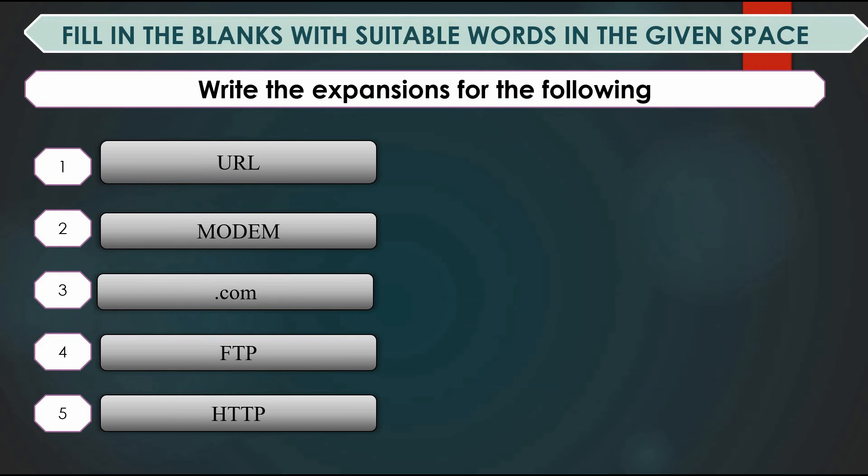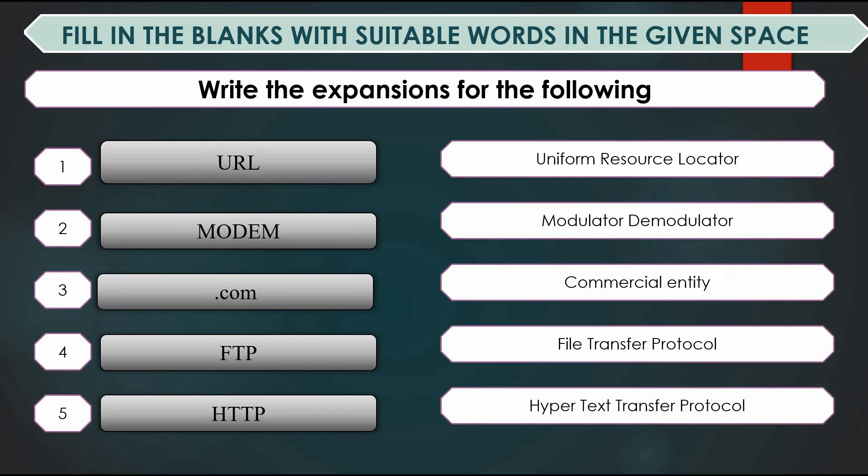Write the expansions for the following: URL — Uniform Resource Locator; Modem — Modulator Demodulator; .com — Commercial (commercial purpose website); FTP — File Transfer Protocol; HTTP — Hypertext Transfer Protocol.